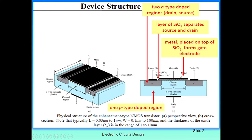This one is the perspective or 3D view of MOSFET. In the 3D view you can see the same things: source, gate, and drain terminals, and this is the channel region. Again, these are N-plus diffusions on the source and drain because this is an N-type MOSFET. Here you can also see the P-type body.